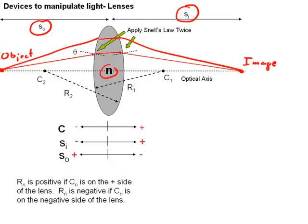The curvature C is positive if it's on the right side of the lens and negative if it's on the left side of the lens. So R sub N, R sub 1, let's say N is 1, is positive since C sub 1 is on the positive side, the right side of the lens over here.